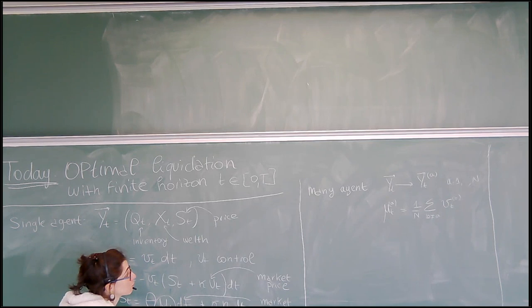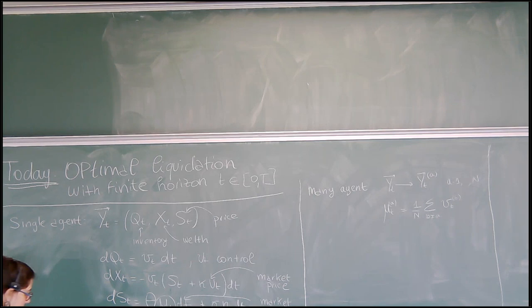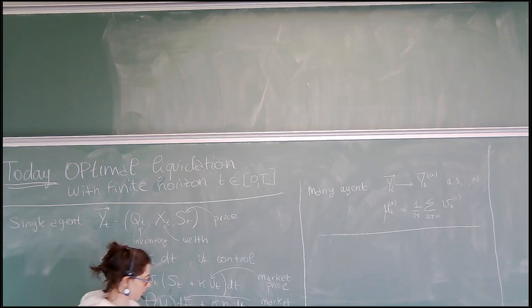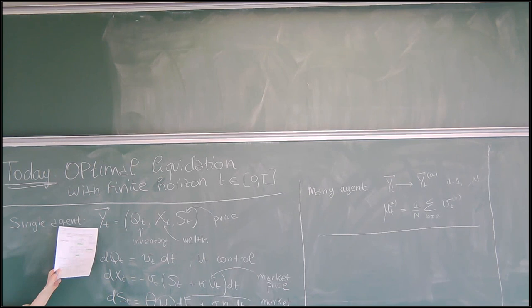In part two, we will go to some sort of continuous limit and replace this average with a continuous average. To conclude the introduction to the model, I need to specify the objective function or cost function, which is actually a functional depending on all of the trajectories over time of this vector Y. Let me call it G of T0 and Y0, where T0 and Y0 are the initial time and initial condition.